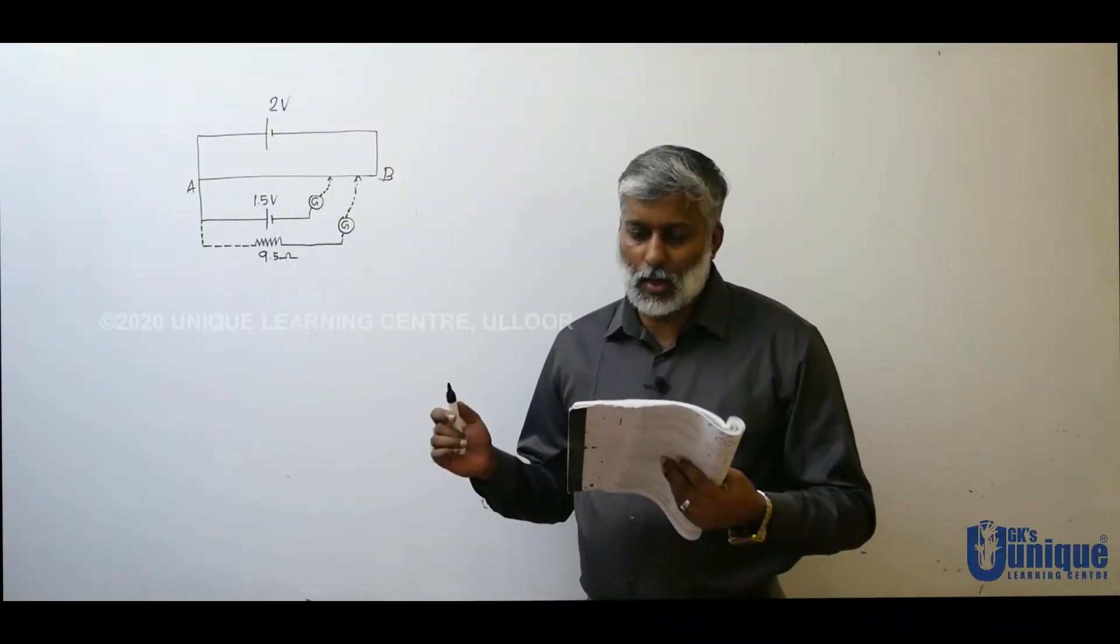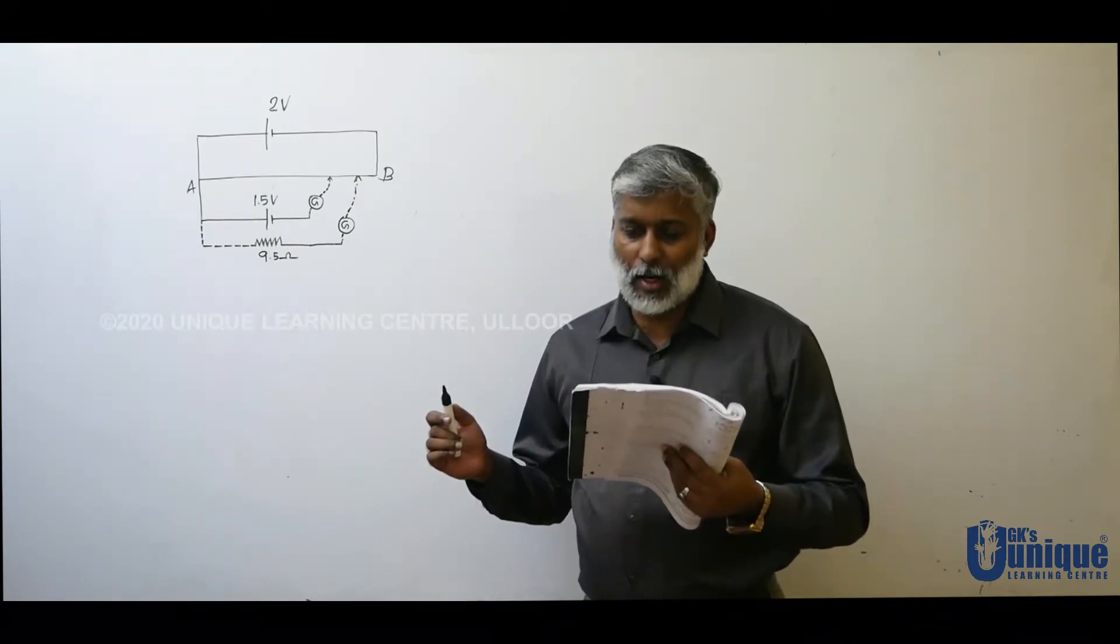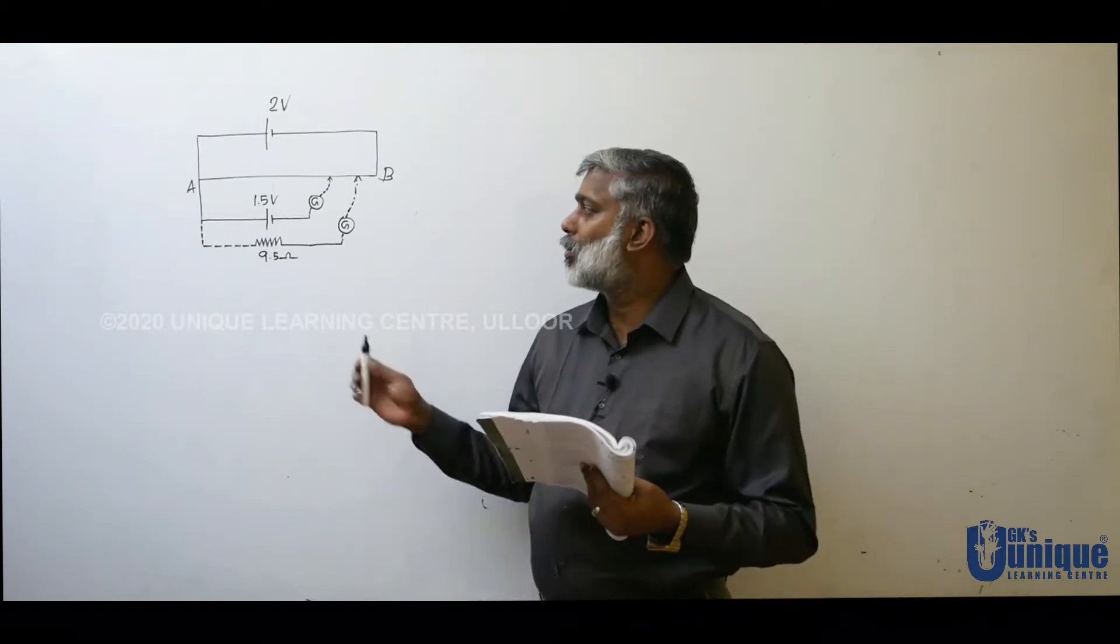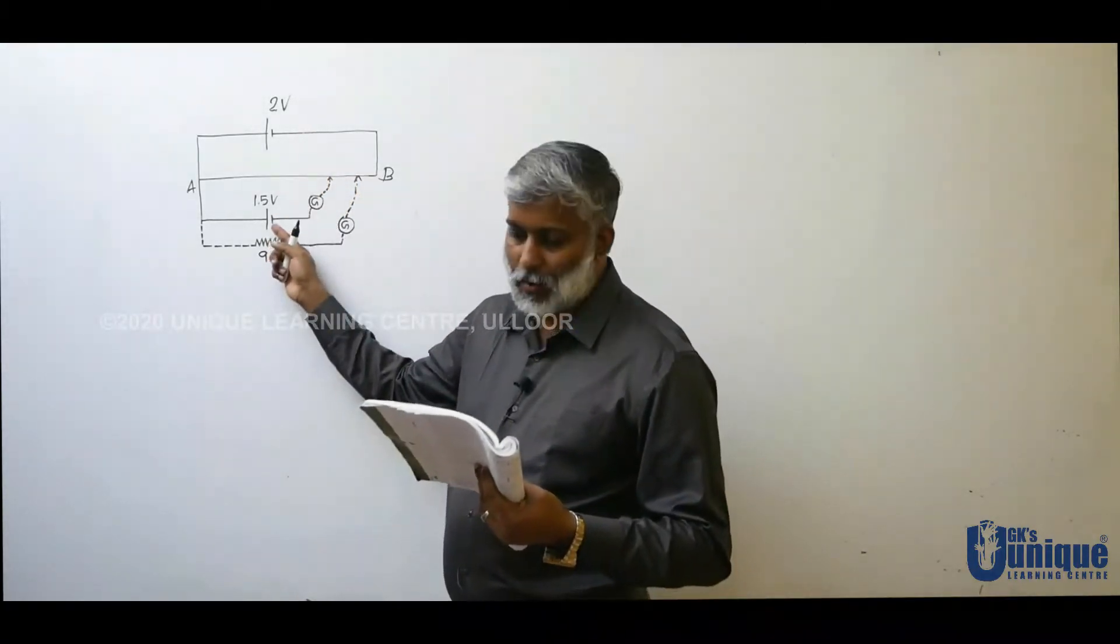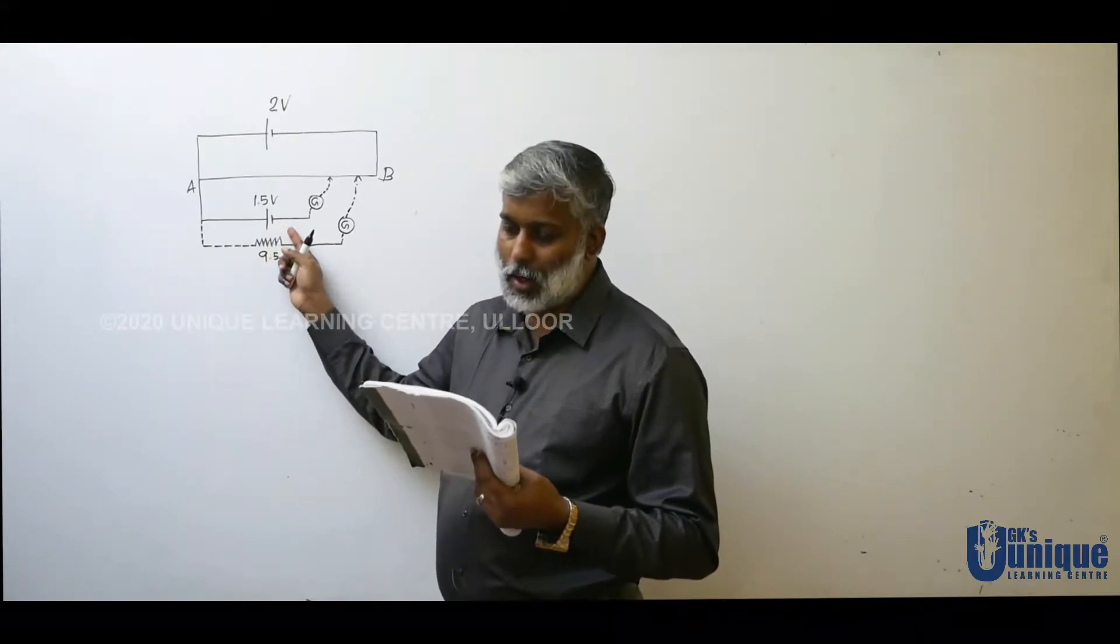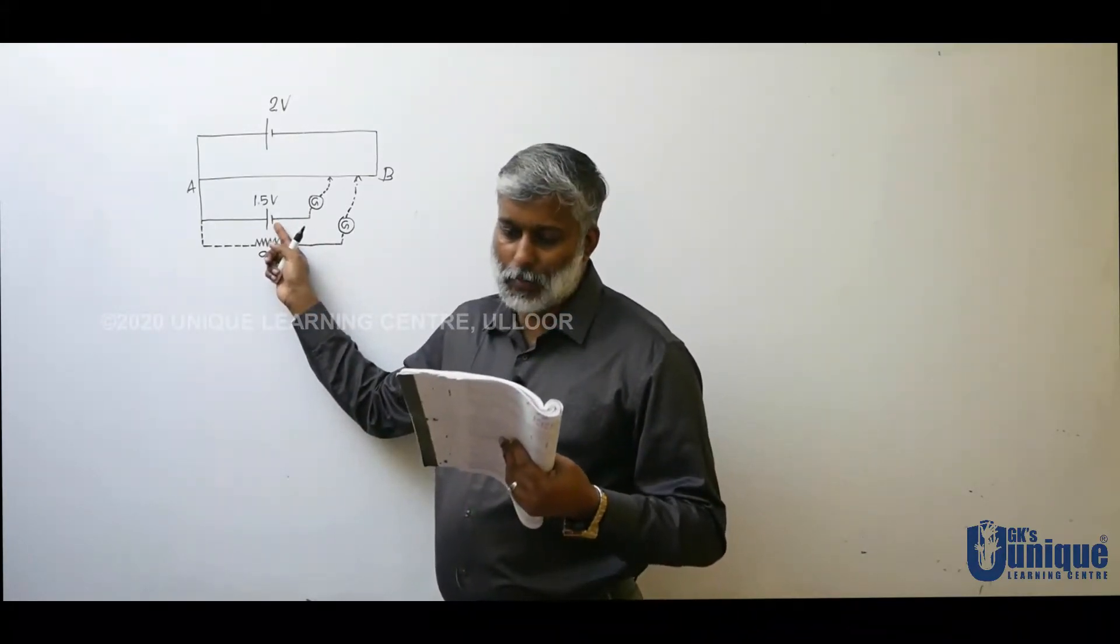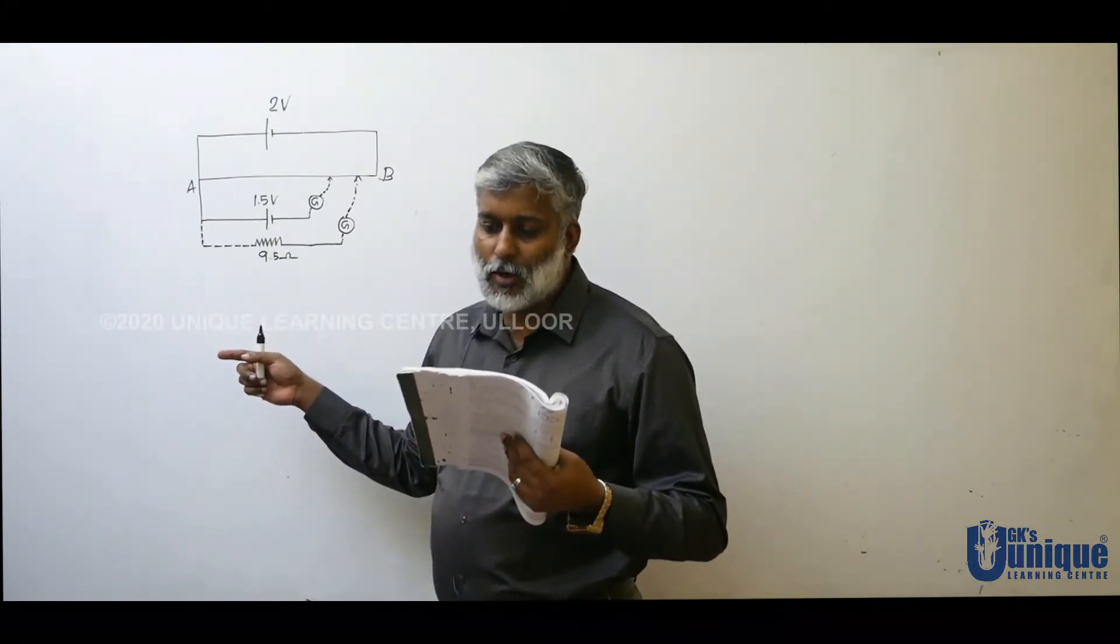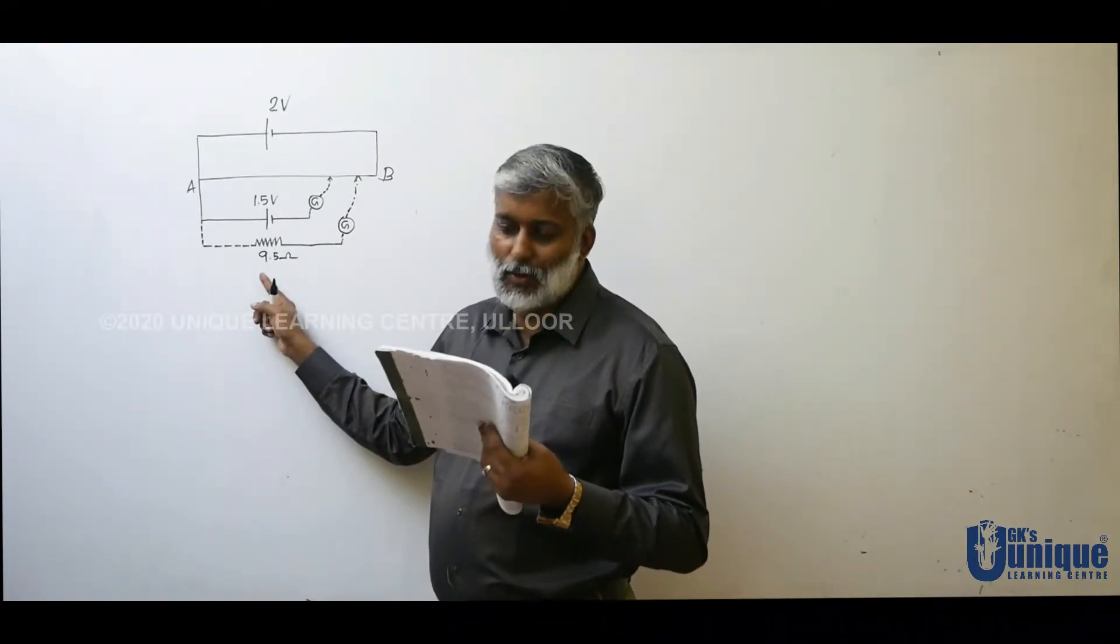Figure shows a 2 volt potentiometer used for determination of internal resistance of a 1.5 volt cell. So now we have 2 volt cell primary and secondary 1.5 volt cell and internal resistance to be determined.